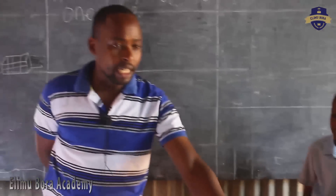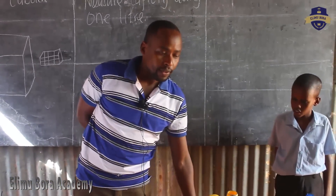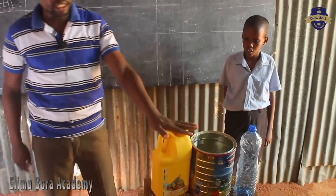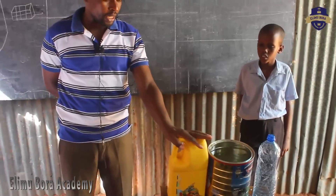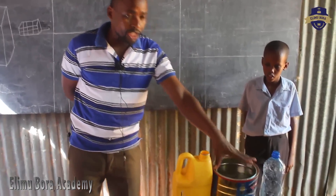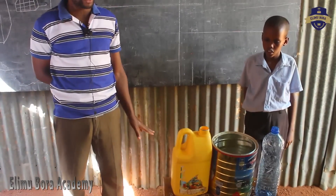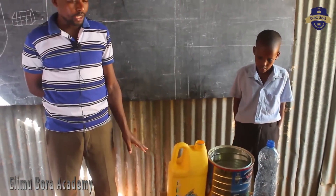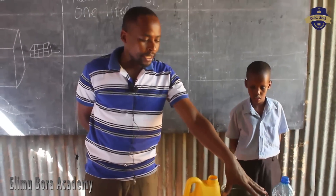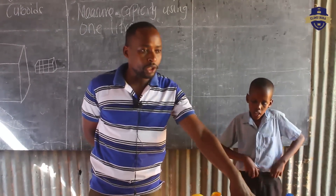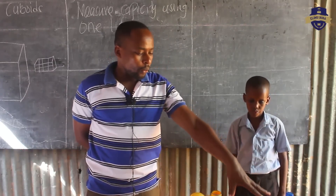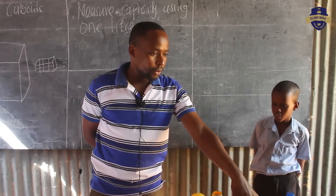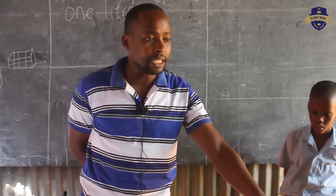So this container is 3 liters, while this one is 5 liters. This one is 5 liters and this one is 3 liters. So I want us — after using this water, we are not supposed to waste water. After we have found out the capacity, you don't have to pour this water away. We shall use the water to water our plants outside.